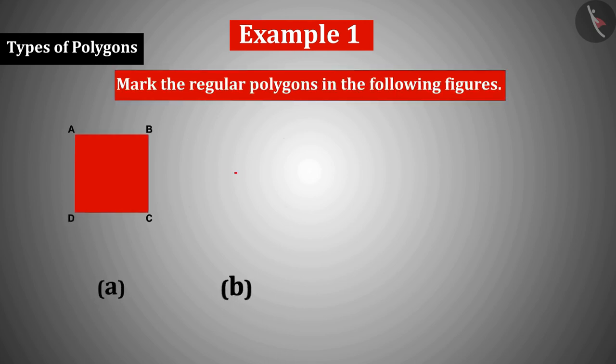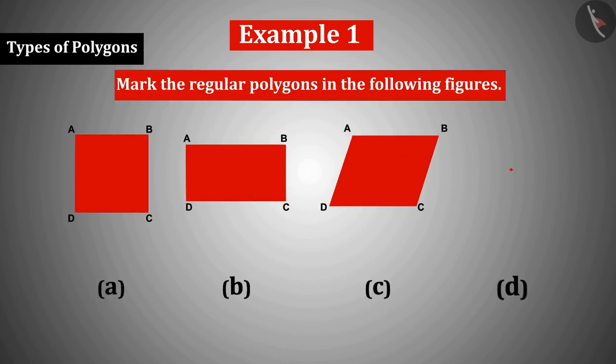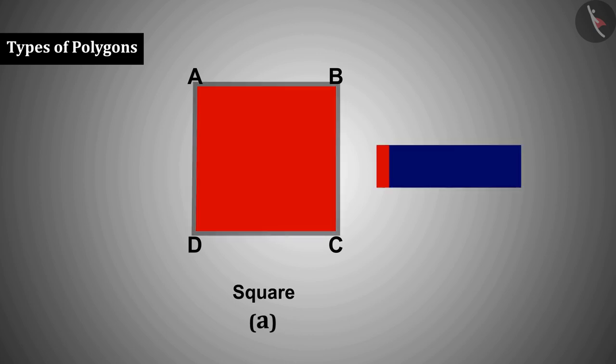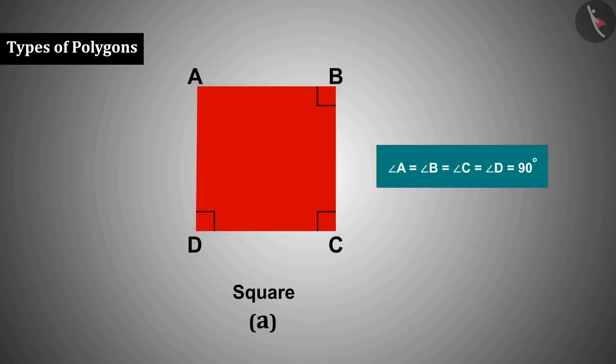Example 1: Mark the regular polygons in the following. Polygon A is a square and all the sides of the square are equal and all the angles are equal, so it is a regular polygon.